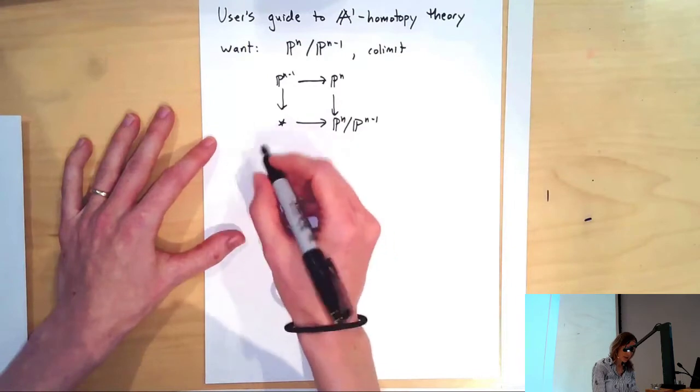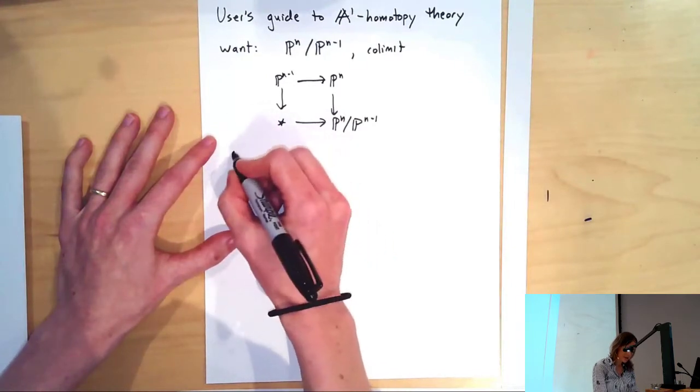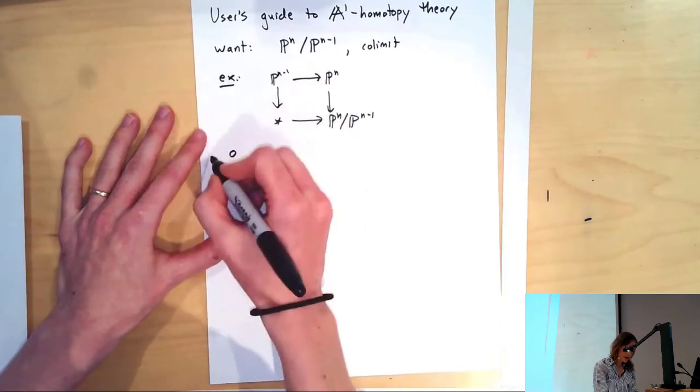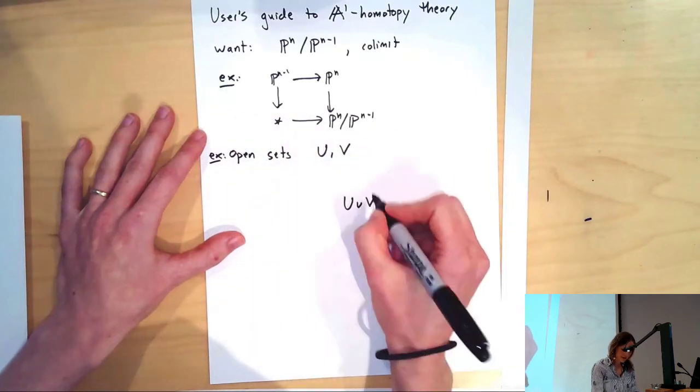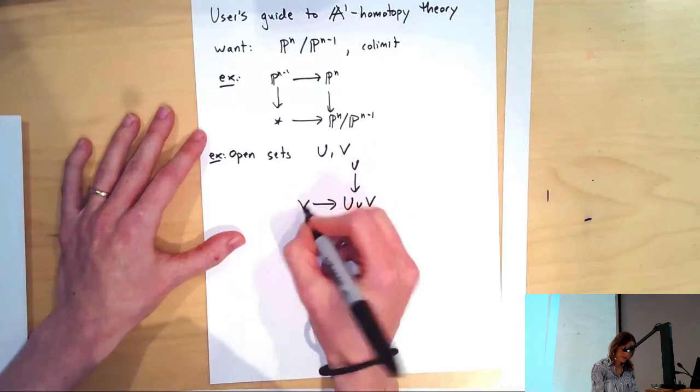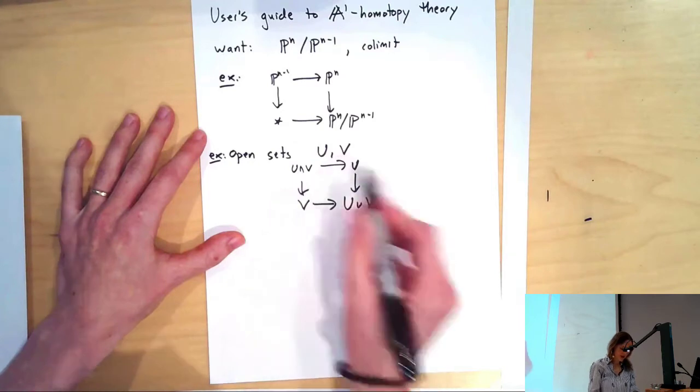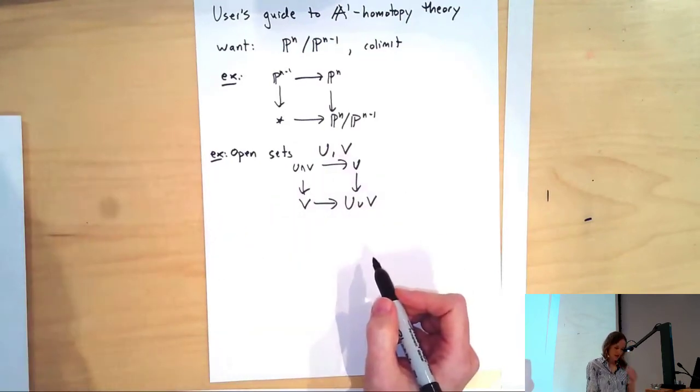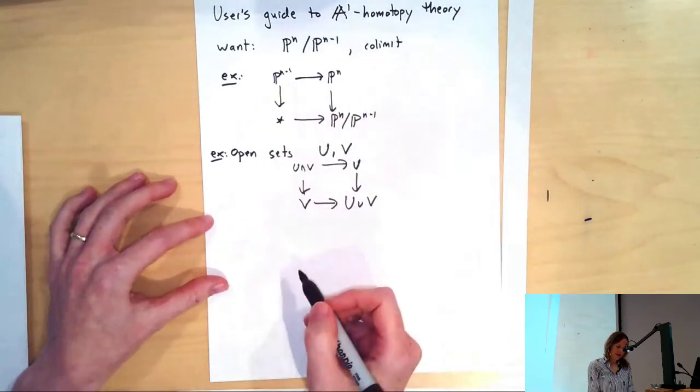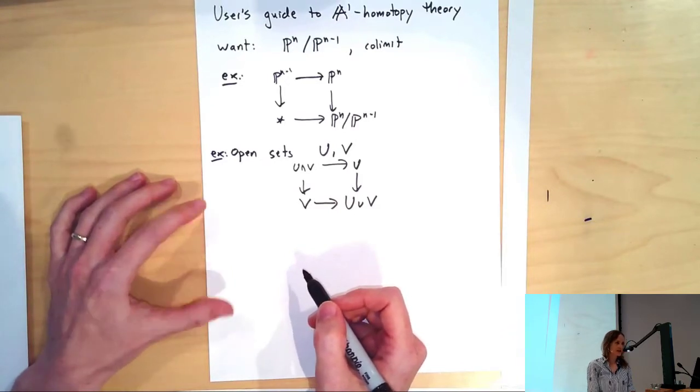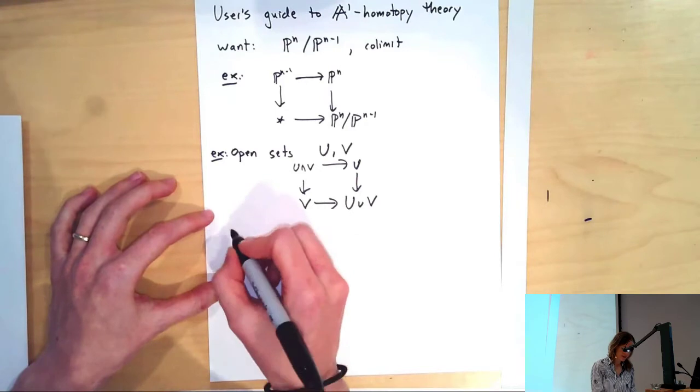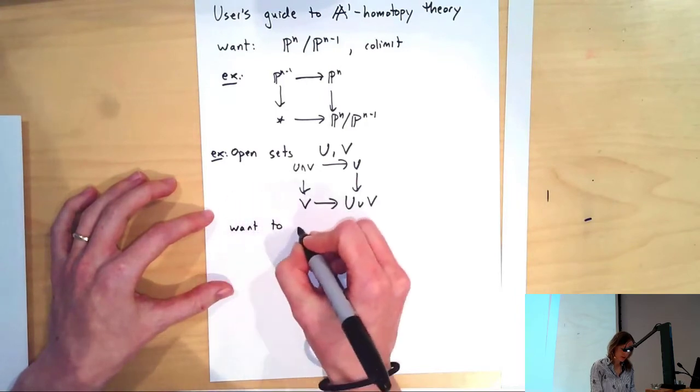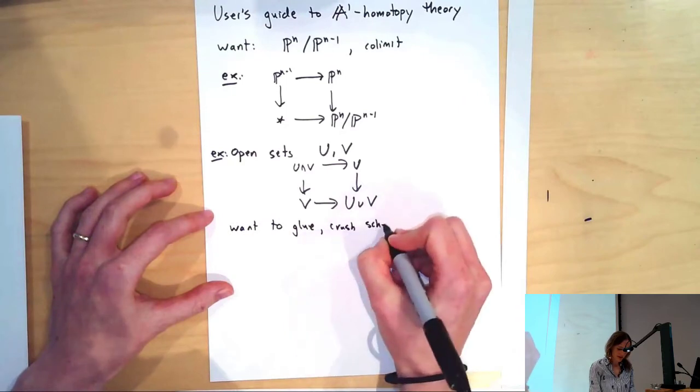So another example of a co-limit: if you have open sets U and V, the union is a co-limit of the two. So we'd like to be able to glue schemes, crush schemes like topological spaces.